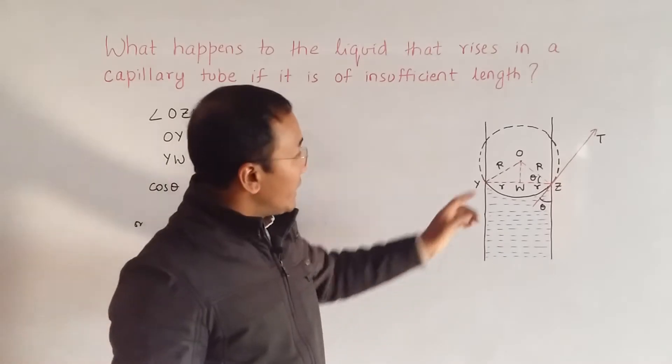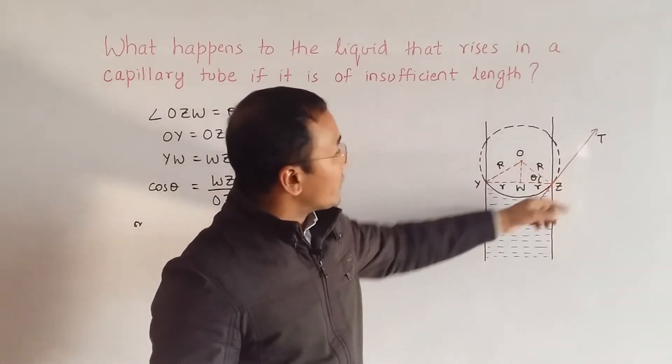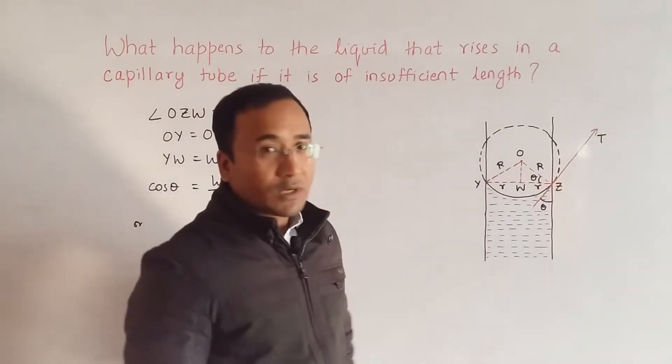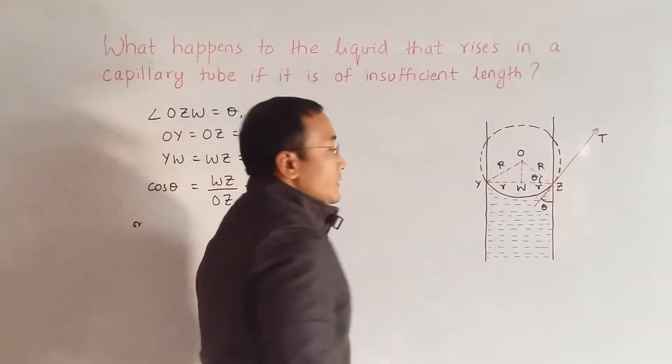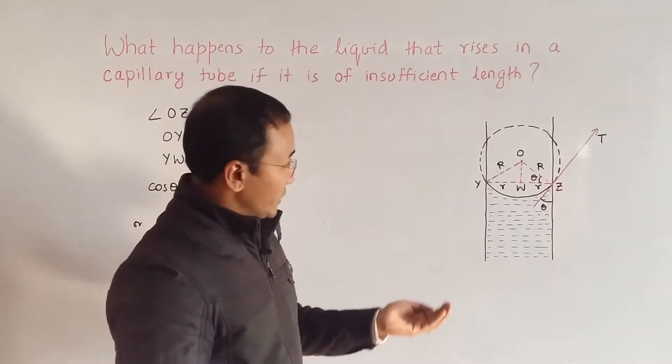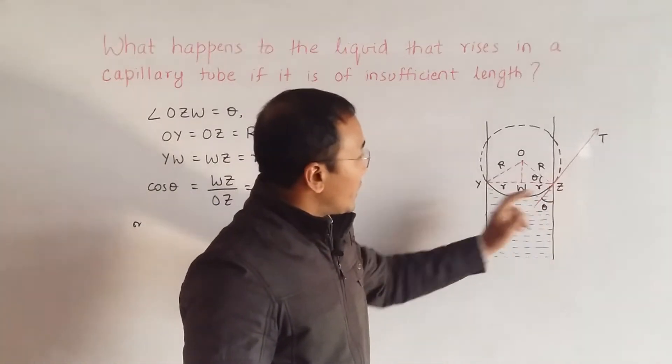And this is the imaginary surface out of which this surface is also a part. The terms large R denote the radius of curvature of the surface, and small r denotes the radius of the capillary tube.